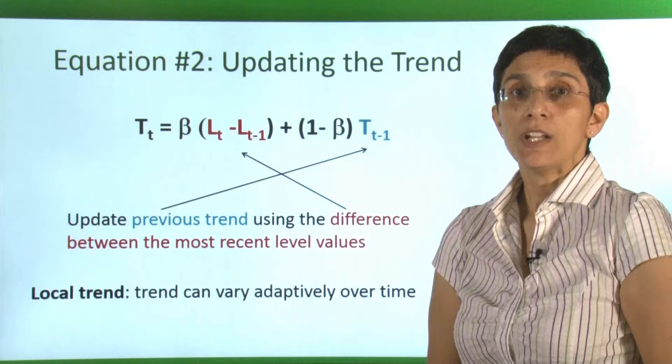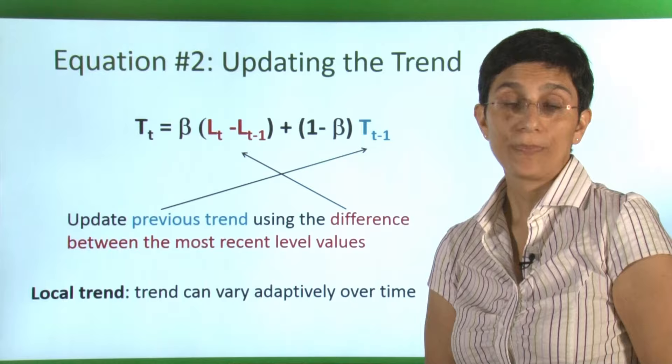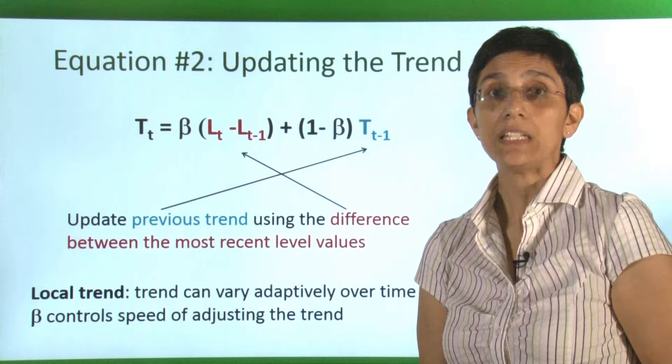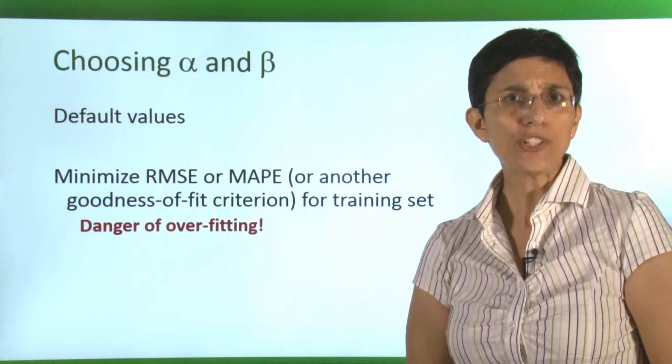Notice that this setup allows the trend to vary and change in shape over time. There is also a smoothing constant beta, which controls the speed of adjusting the trend. If the trend changes very quickly during the series, we might want to learn it faster.